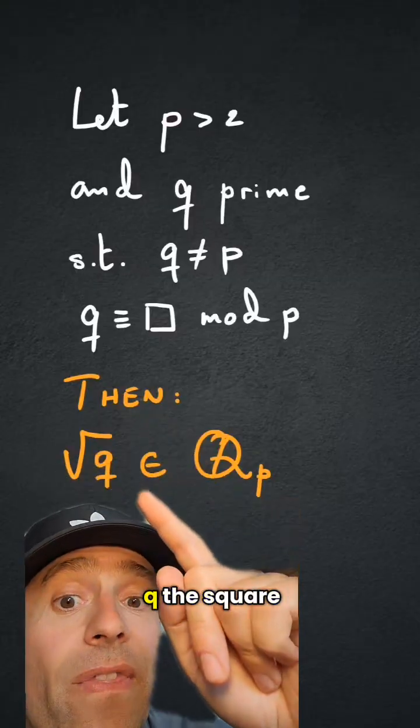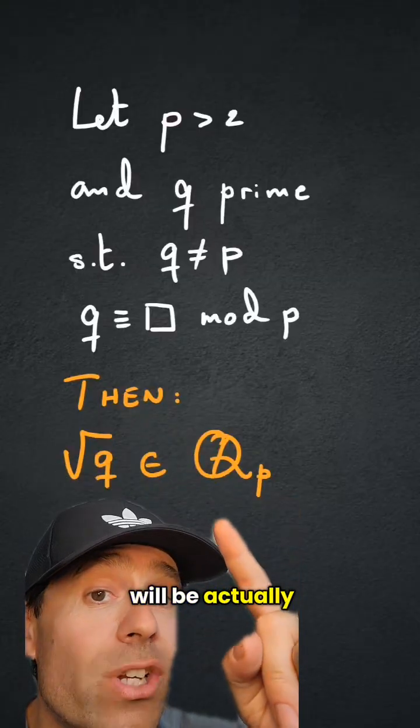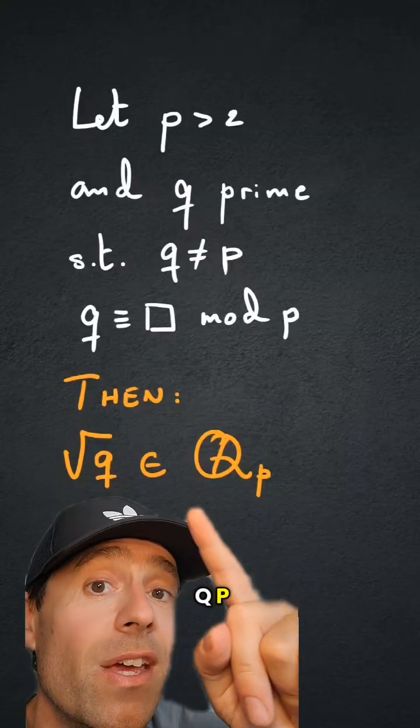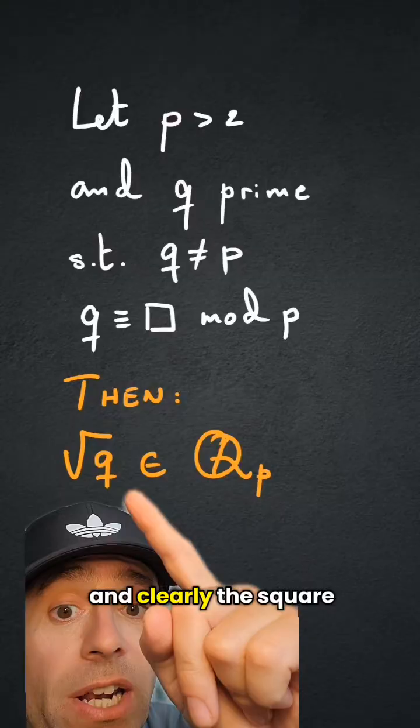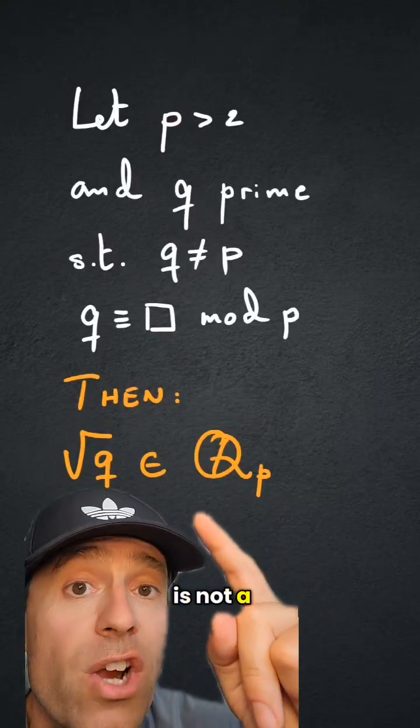And then for such q, the square root of q will be actually an element of Q_p. It will be a p-adic number, and clearly the square root of q is not a rational number.